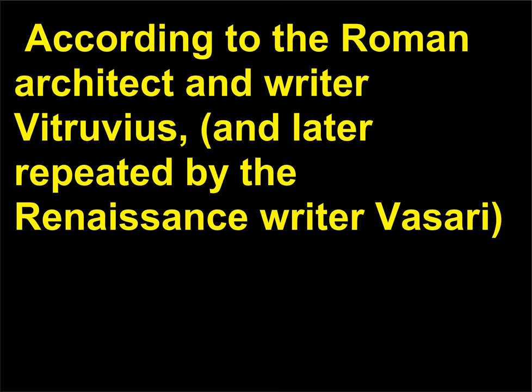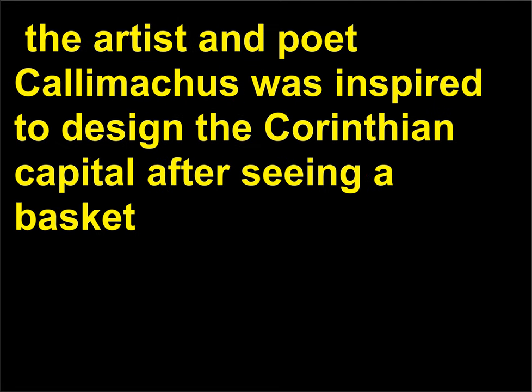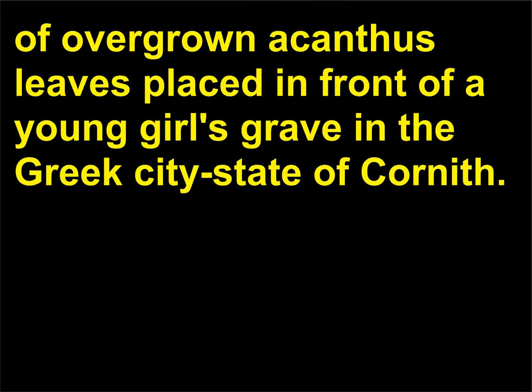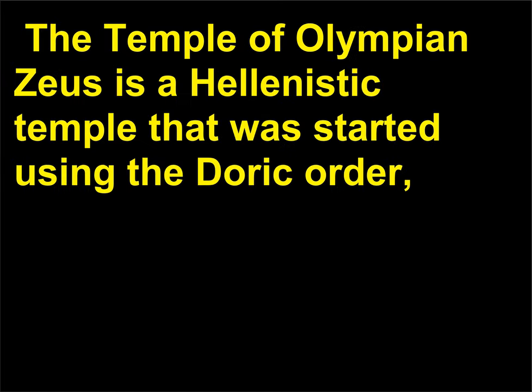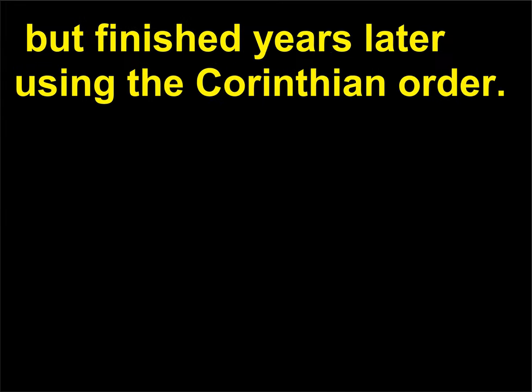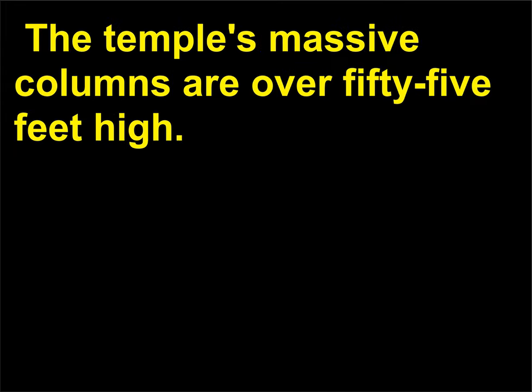According to the Roman architect and writer Vitruvius — and later repeated by the Renaissance writer Vasari — the artist and poet Callimachus was inspired to design the Corinthian capital after seeing a basket of overgrown acanthus leaves placed in front of a young girl's grave in the Greek city-state of Corinth. The Temple of Olympian Zeus is a Hellenistic temple that was started using the Doric order but finished years later using the Corinthian order, with massive columns over 55 feet high.